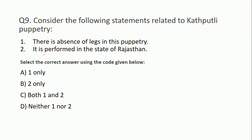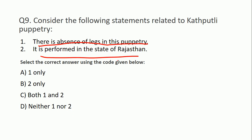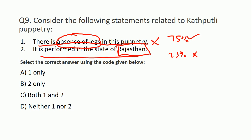9th question: Consider the following statements related to Kathputli puppetry. Statement one: There is absence of legs in the puppetry. Statement two: It is performed in the state of Rajasthan. Options: one only, two only, both one and two, neither one nor two. इसका answer है both one and two। Kath का मतलब है wood, पुतली का मतलब है doll, and it is accompanied by dramatic folk music। Absence of legs - हम सोचते हैं ऐसा कैसे हो सकता - लेकिन यही है जो Nitin Singhania book में highlight करके दिया है। यह Rajasthan में popular है।